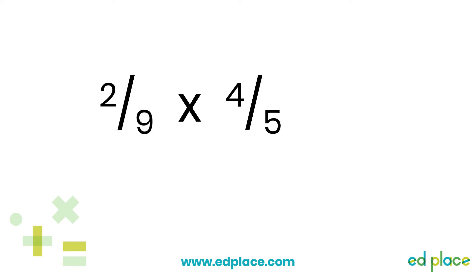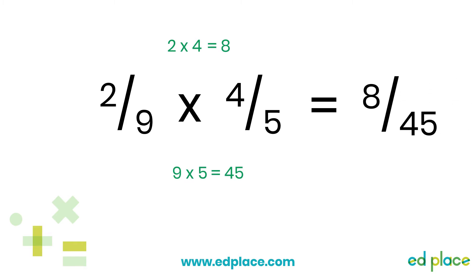There is one last thing we need to recap before we move on to the new learning. Do you remember how to multiply fractions together? What would two-ninths multiplied by four-fifths be? All you need to do is multiply the numerators together — two times four — and multiply the denominators together — nine times five. Two times four is eight, and nine times five is forty-five. So two-ninths times four-fifths is eight forty-fifths.